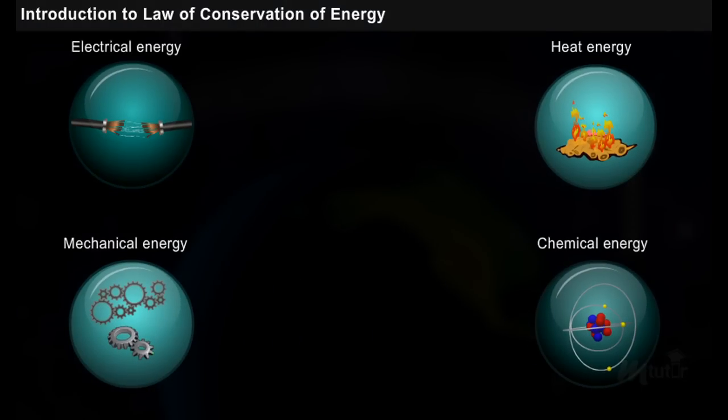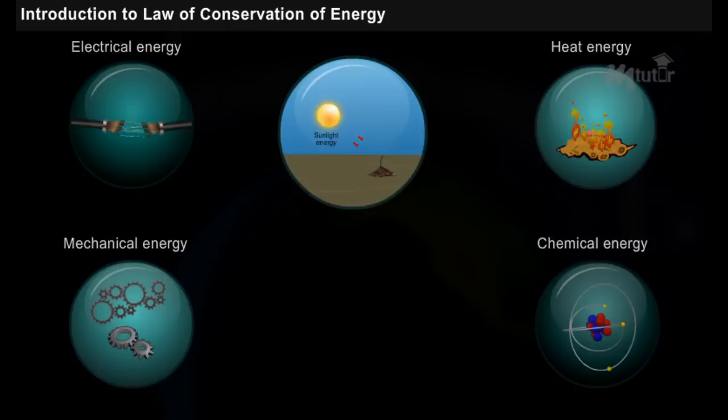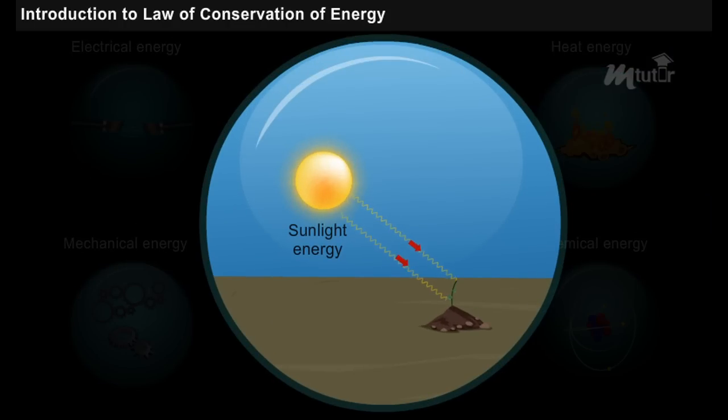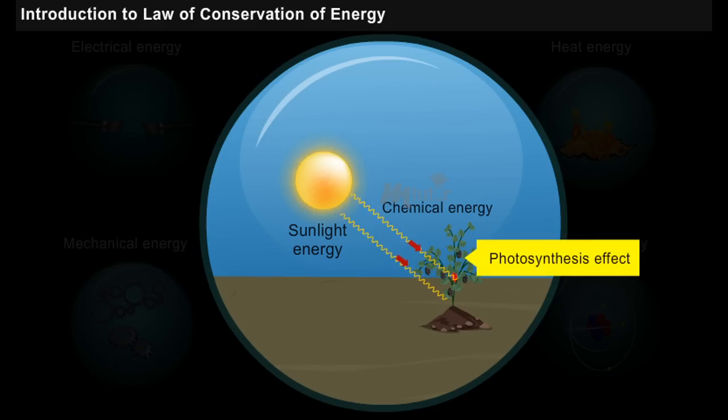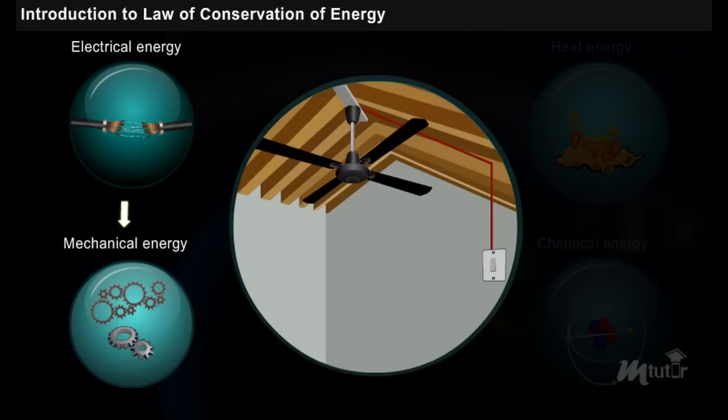From the conservation law, these energies can be converted from one form to another. Let us discuss these changes. The heat energy from the sun is absorbed by plants and is converted into chemical energy through photosynthesis. It is a natural process. Let us see a few examples for artificial energy conversion processes.